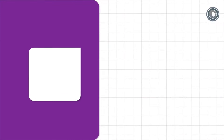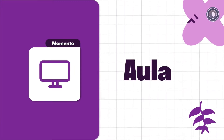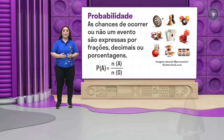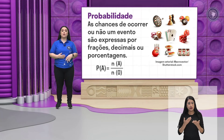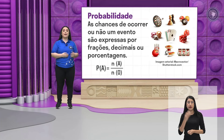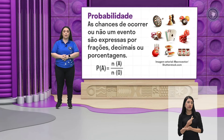Muito bem, então vamos à nossa aula! Iniciando a nossa aula, vamos continuar vendo probabilidade. Vocês estão vendo aqui que a probabilidade são as chances de ocorrer ou não um evento.